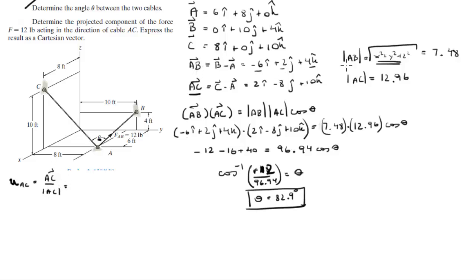Vector AC is right here and the magnitude is right here. We already found them, so it comes out to be 0.154i minus 0.617j plus 0.772k.